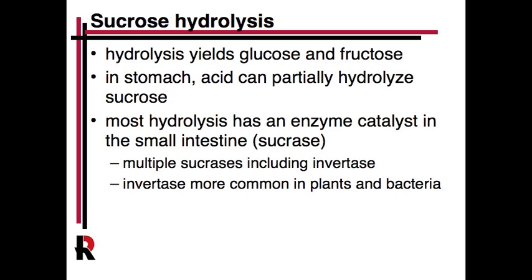Hydrolysis is a main source of carbohydrates, along with starch. Hydrolysis of sucrose will yield glucose and fructose. Sucrose is actually pretty stable at neutral pH, but you can hydrolyze it in acid — which is what happens in the stomach, though it's still a relatively slow process. Not all sucrose is digested in the stomach; typically it waits until it reaches the small intestine, where the small intestine secretes enzymes called sucrases to hydrolyze the sucrose.